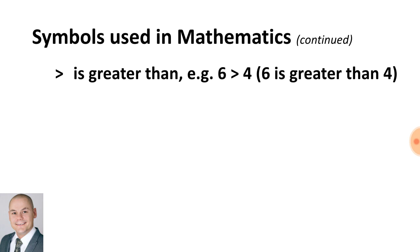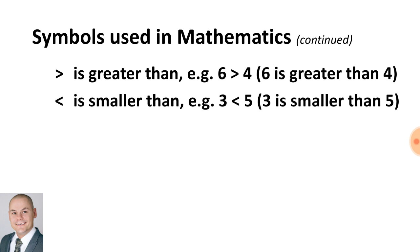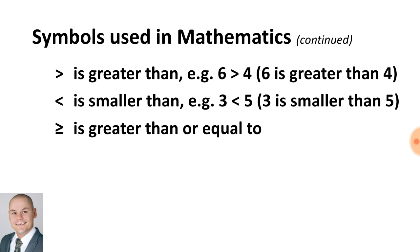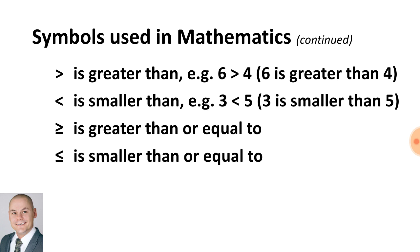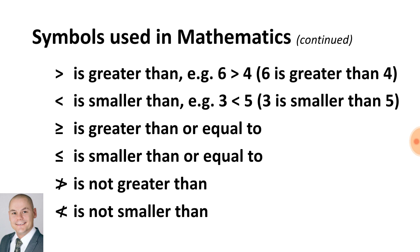Greater than — for example, 6 is greater than 4. 3 is smaller than 5. Greater than or equal to. Smaller than or equal to. Not greater than and not smaller than.